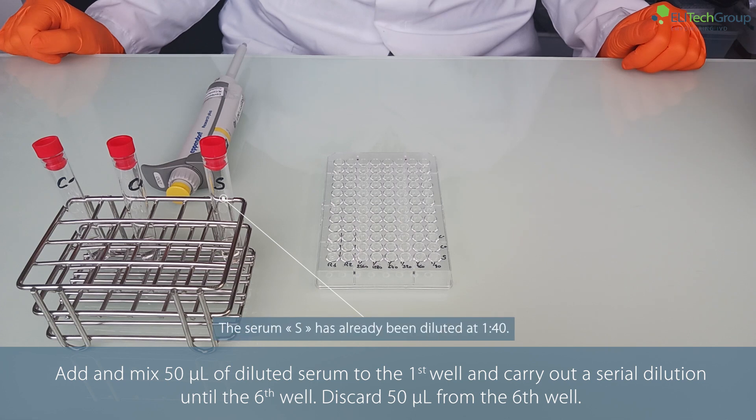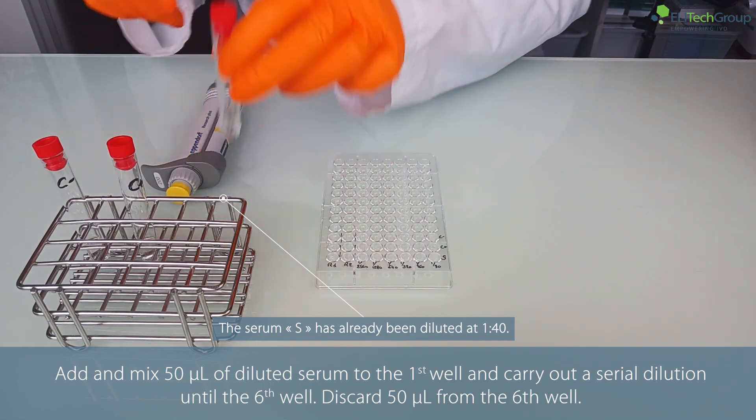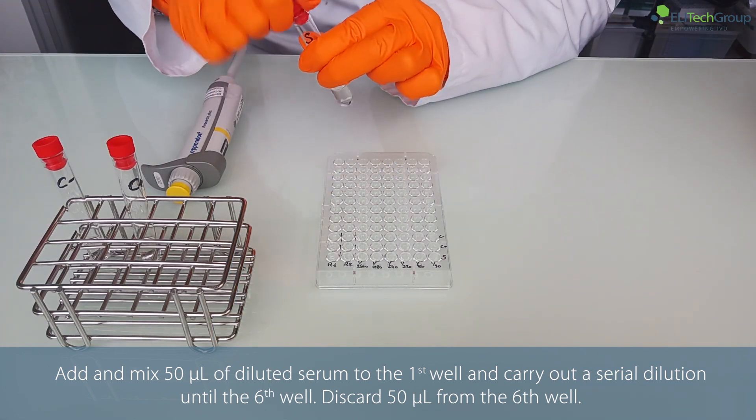Add and mix 50 microliters of diluted serum to the first well and carry out a serial dilution until the sixth well. Discard 50 microliters from the sixth well.